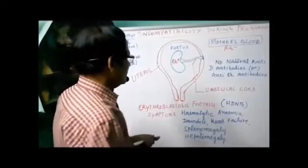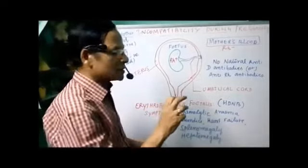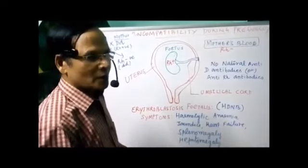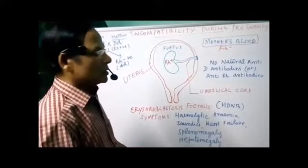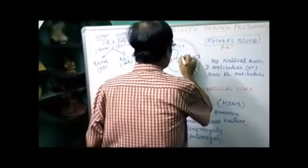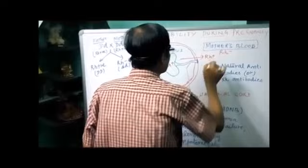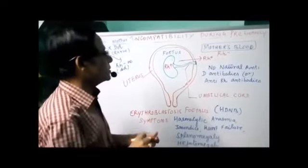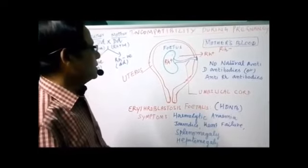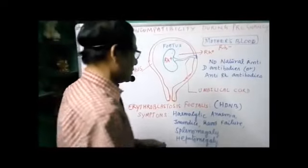Then how does the problem occur? If mother is Rh negative and fetus is Rh positive, nothing would happen during the first pregnancy, as there is no anti-D antigen in the mother. So the child will be delivered normally. But at the time of the first delivery, there is a breakage of the placenta, and there is a chance of Rh positive antigen from the fetus entering into the mother's blood — only at the time of delivery. A few antigens enter and mix into the mother's blood because of the rupture of the placenta. By the time the child is born, nothing would happen to the first child.